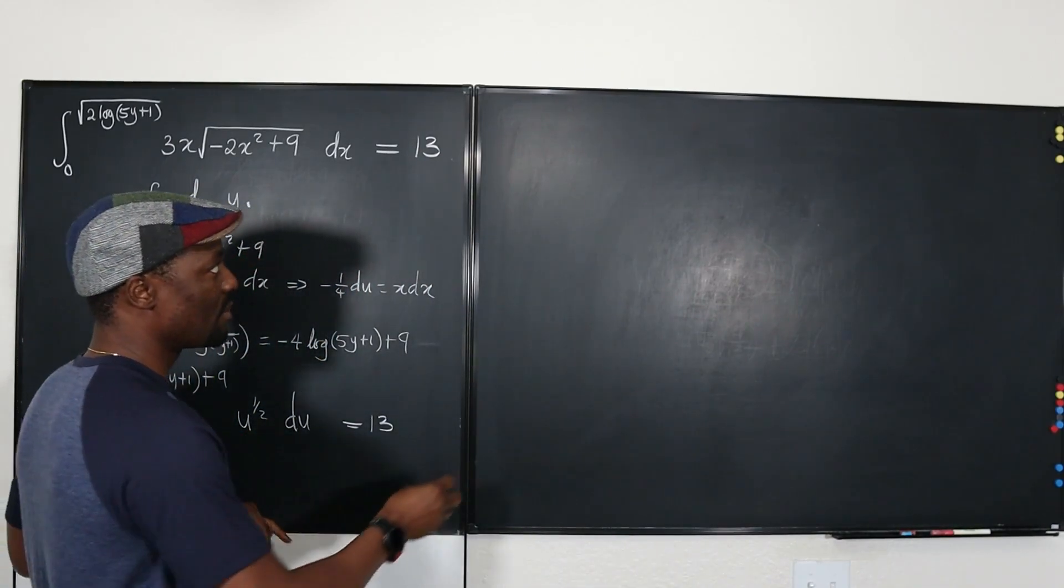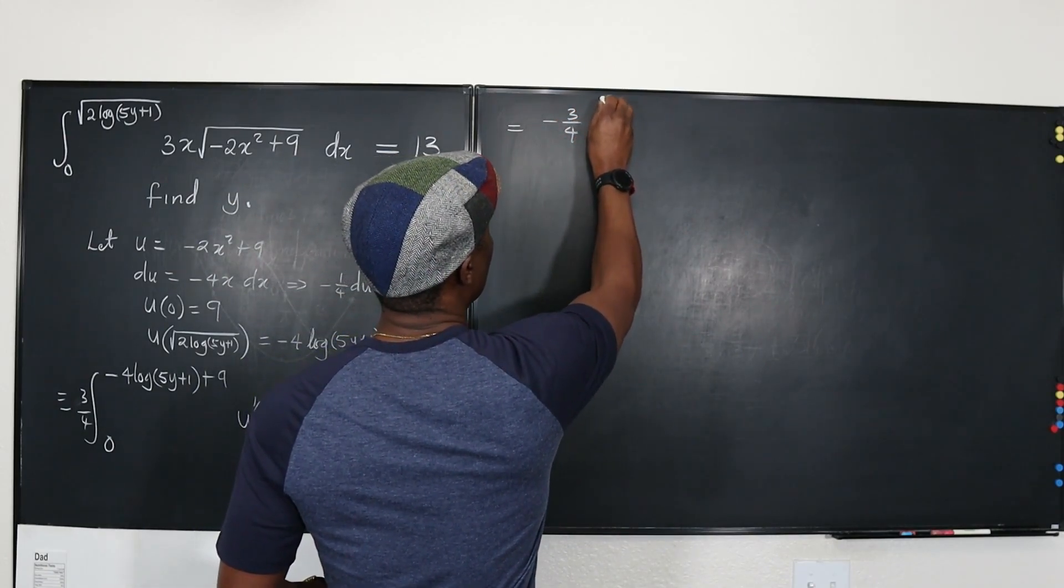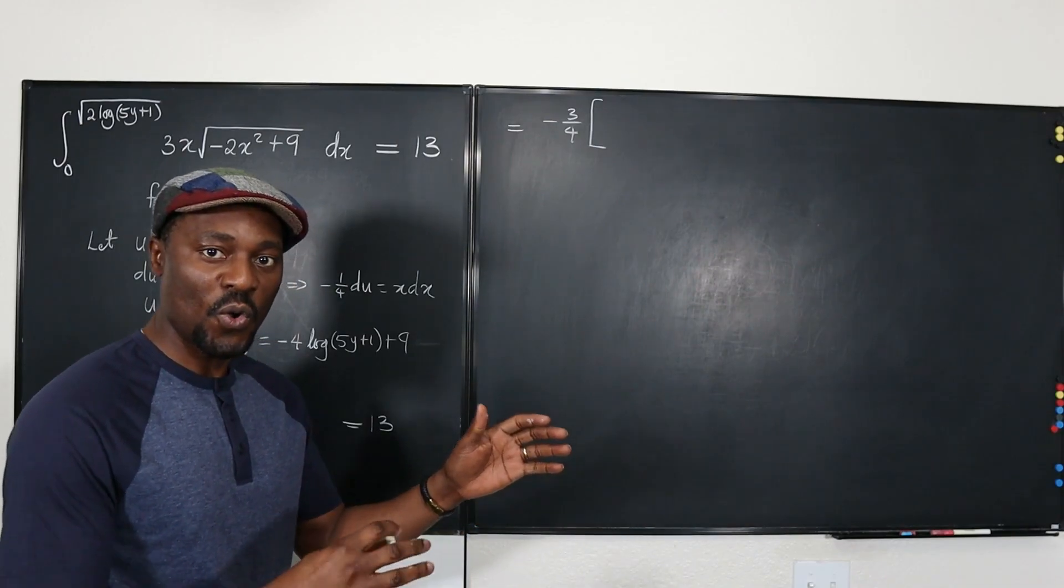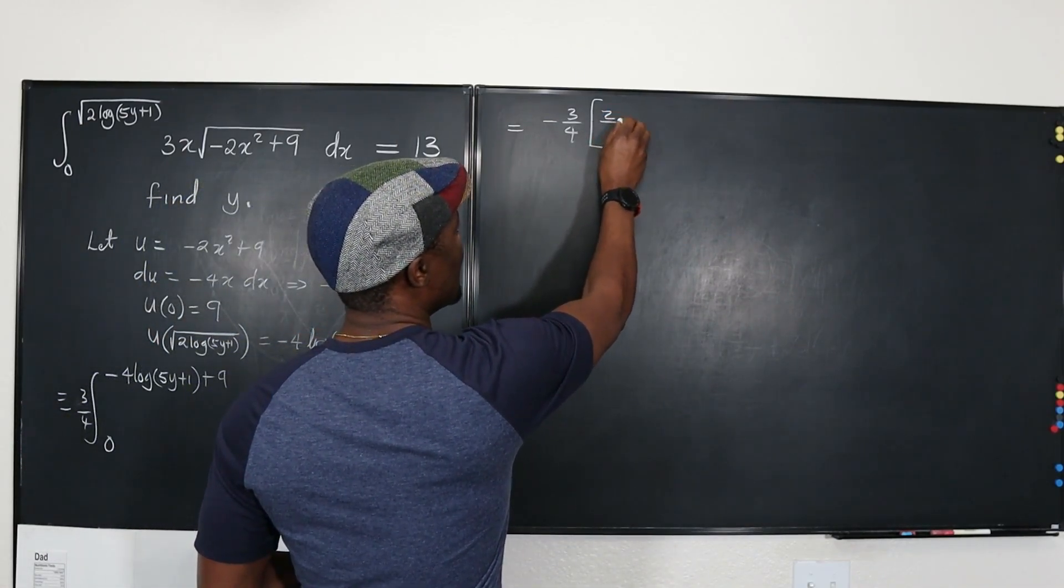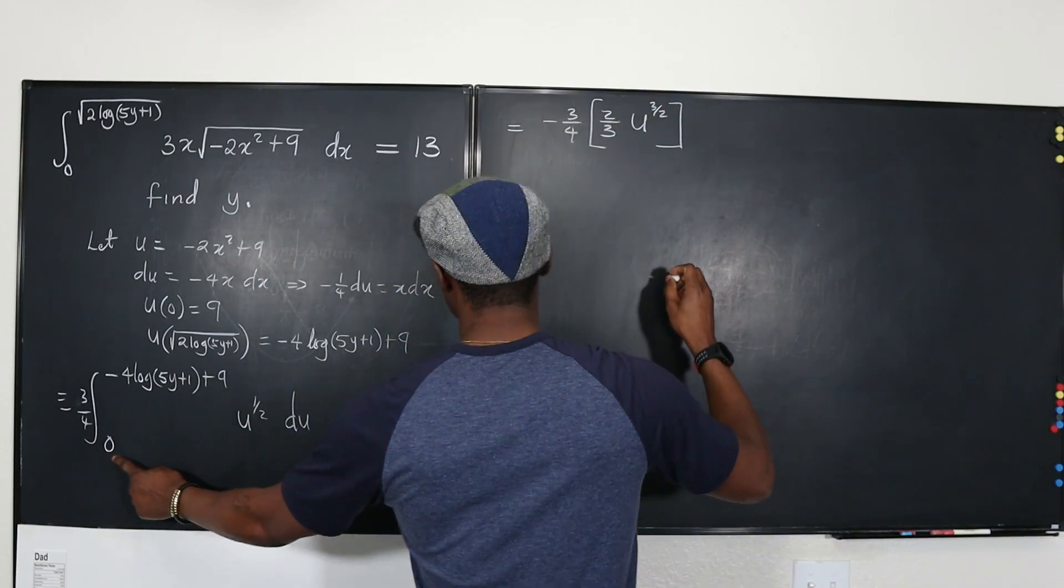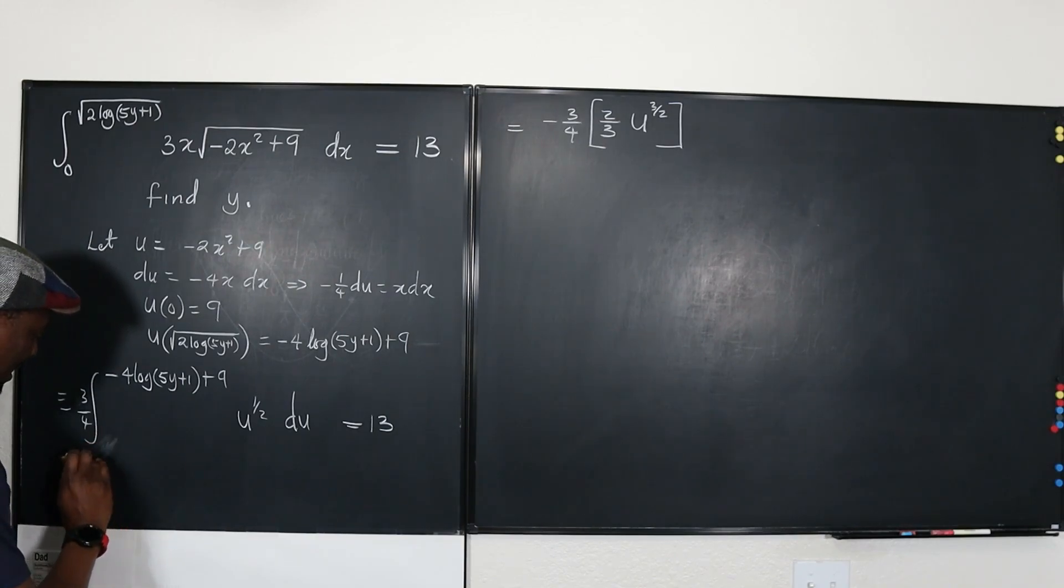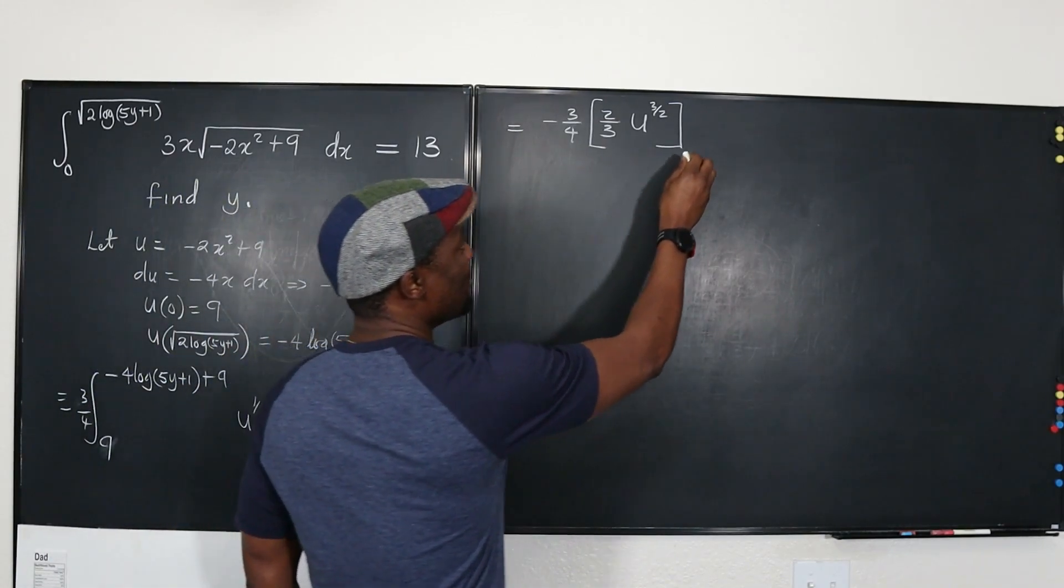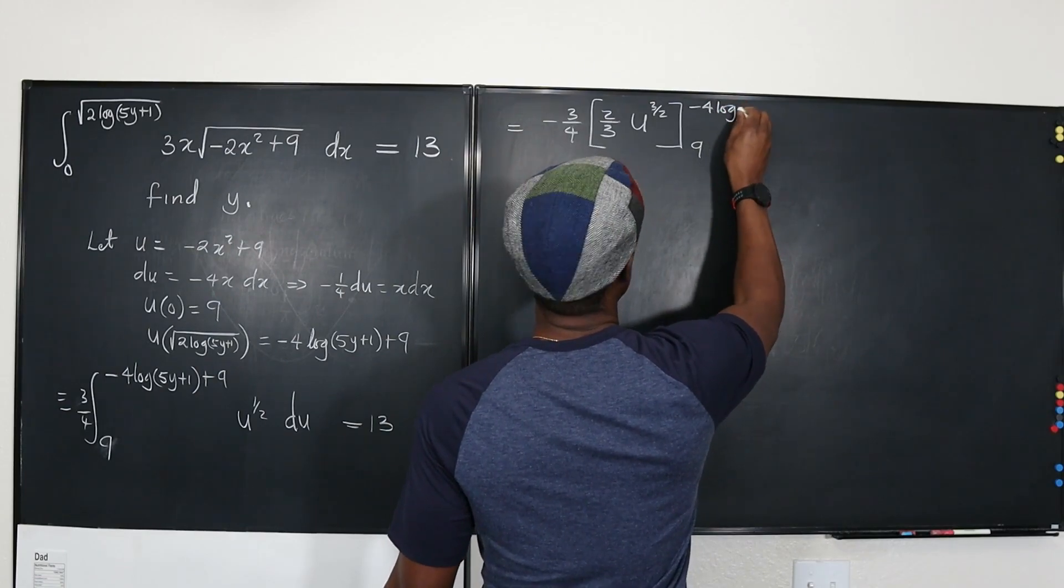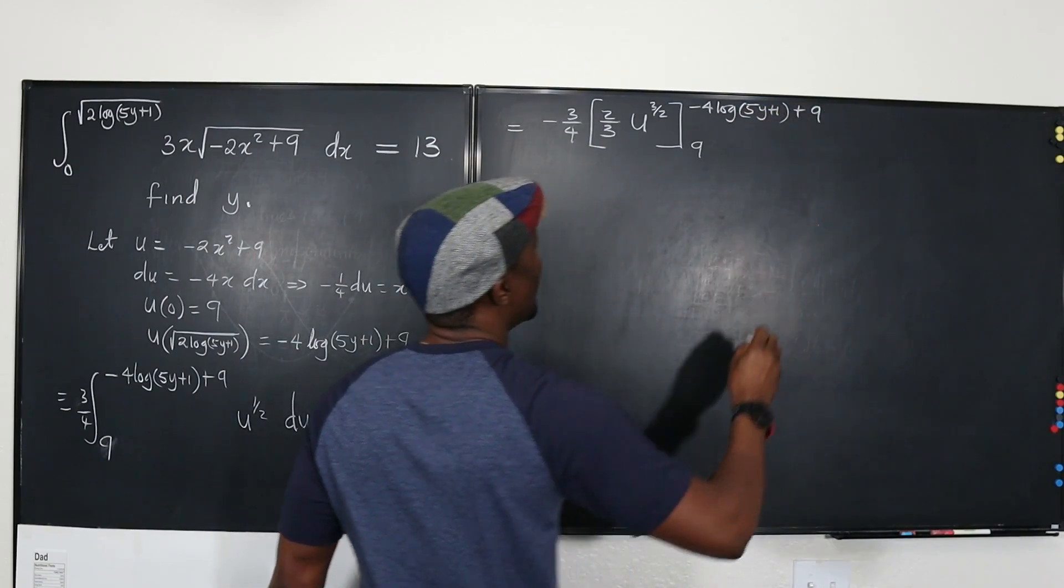Let's continue. The next move is to integrate this. Remember that when you integrate this, what you have is going to be negative 3 over 4 multiplied by the integral. If we integrate this, we're going to get u to the 3 halves over 3 halves, which is the same thing as times 2 thirds of u to the 3 halves. Now evaluate it from the lower boundary. The lower boundary is not 0. The lower boundary is 9. So it's going to be from 9 to the upper boundary, a complicated expression, negative 4 log 5y plus 1 plus 9.